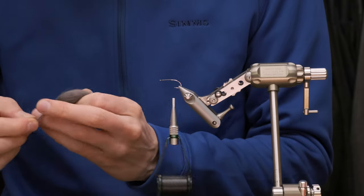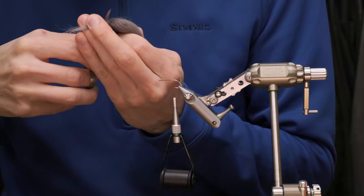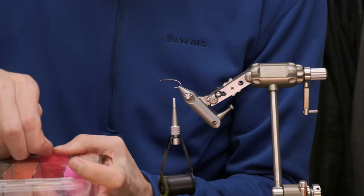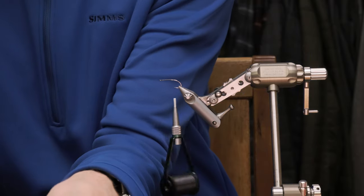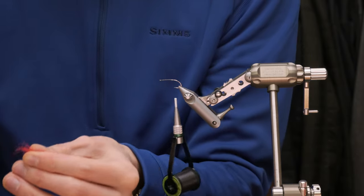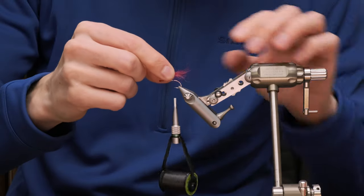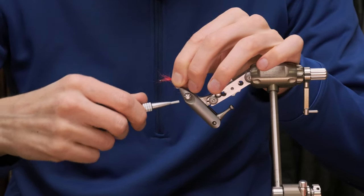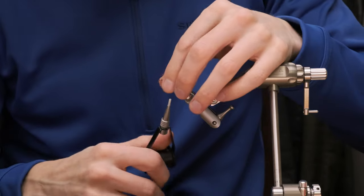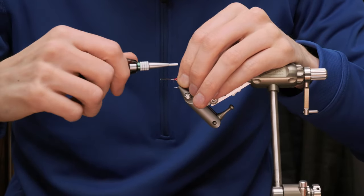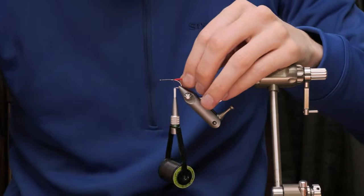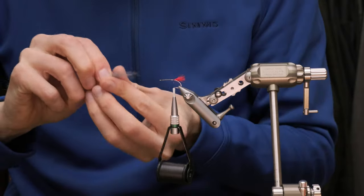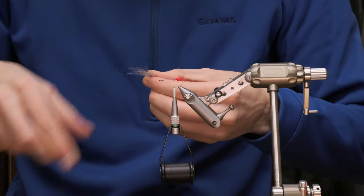Peter started off with a Partridge CS54 in a size 8 and he's attached his thread. The first thing he's gonna do is take a little bit of red SLF dubbing. As you see he just takes a pinch, ties it in at the middle just on top. A couple of wraps and double it over, then secure it with some extra wraps. Trim it. This will create a little tag, something for the fish to focus on.